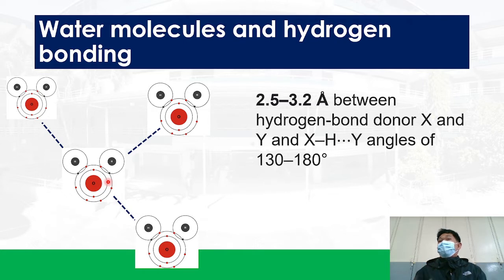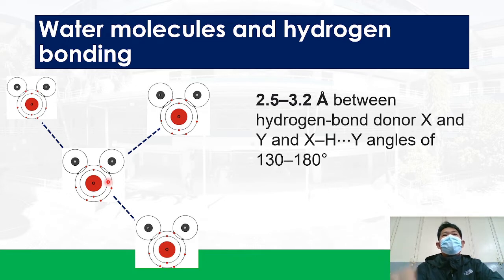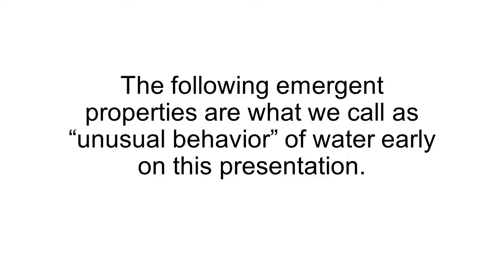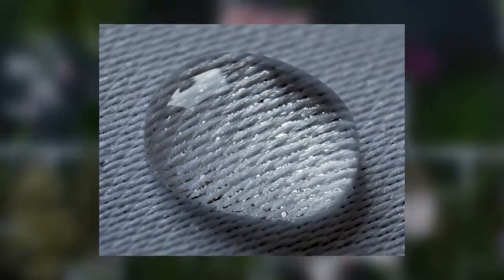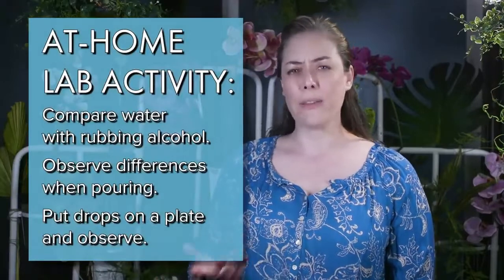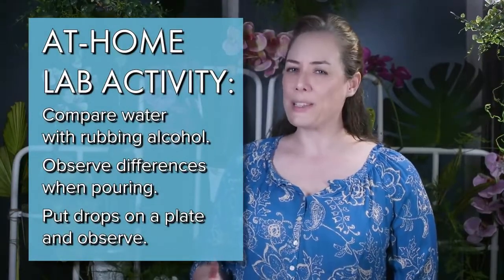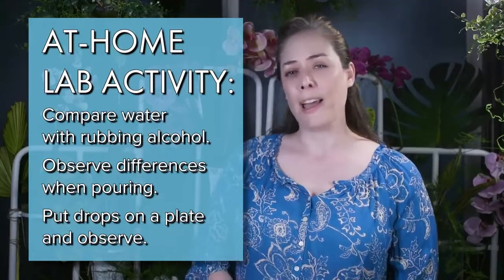Now, what about water's emergent properties because of hydrogen bonding? Water is cohesive. Think about how water beads up on a surface — because water is so interconnected by hydrogen bonds, the sides of a drop of water pull together, forming a rounded shape. Compare this with a less cohesive liquid like ethanol or isopropyl alcohol. These less cohesive fluids flow more rapidly and they don't bead up.